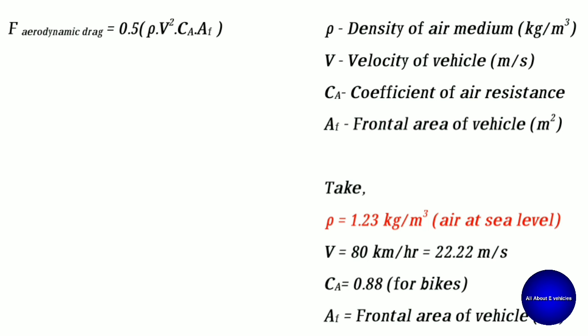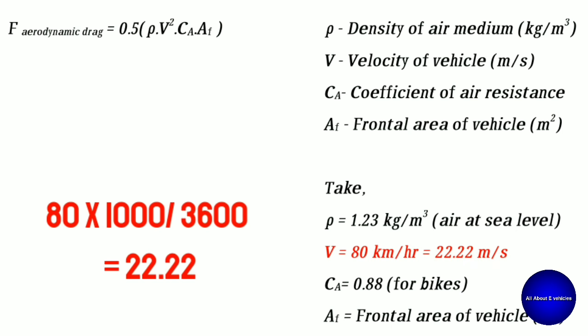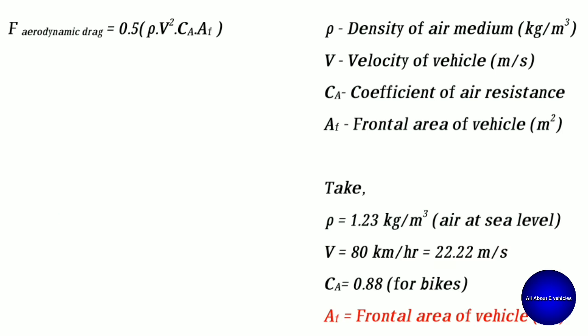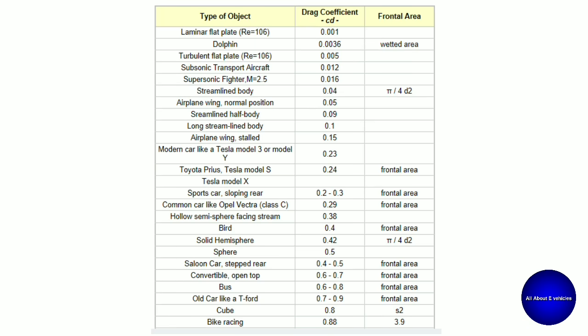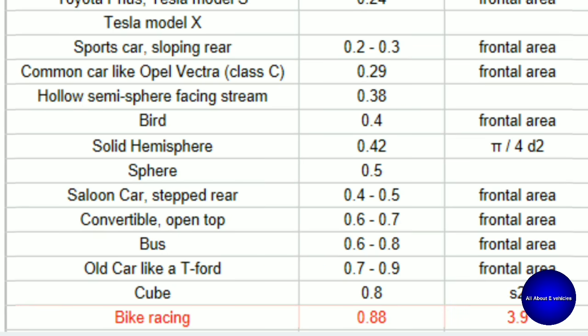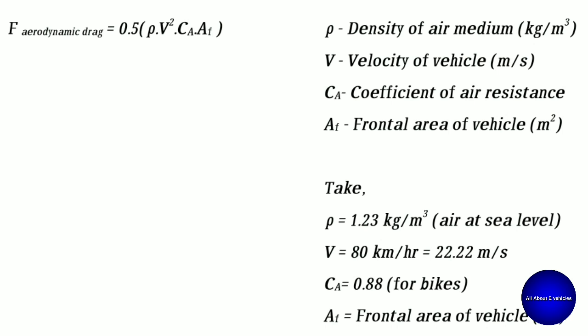We take ρ = 1.23 kg/m³ (air density at sea level). The vehicle velocity is 80 km/h, converted to m/s by multiplying by 1000/3600, giving 22.22 m/s. CA (coefficient of air resistance) is taken as 0.88 for bikes — as seen in the table on screen showing values for cars, buses, and various structures. The only remaining value to find is the frontal area AF.